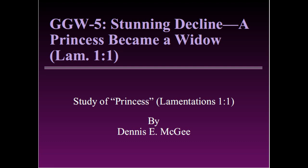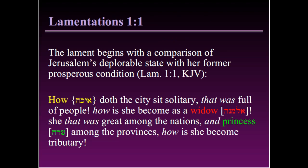Welcome to Gleaning in God's Word. We're continuing our study of Lamentations 1:1. In this video, we will look at the Hebrew word for princess. By way of review, Lamentations 1:1 begins with a comparison of Jerusalem's deplorable state with her former prosperous condition: 'How doth the city sit solitary that was full of people? How is she become as a widow? She that was great among the nations and princess among the provinces, how has she become a tributary?' In previous videos, we've looked at the acrostic word 'how' and the word for widow. In this video, we will look at the word 'princess.'